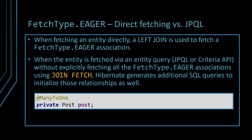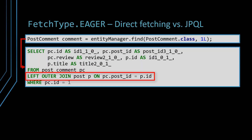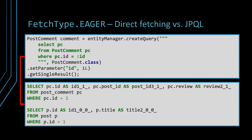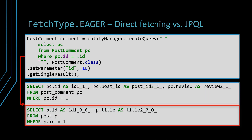When fetching an entity directly, a left join is used to fetch a fetch type eager association. When the entity is fetched via an entity query — JPQL or Criteria API — without explicitly fetching all the fetch type eager associations using join fetch, Hibernate generates additional SQL queries to initialize those relationships as well. Assuming the PostComment entity has a many-to-one Post association that uses the default fetch type eager strategy, when fetching the PostComment entity directly using an EntityManager find() method call, we can see that a left join is generated to fetch the associated Post entity eagerly. On the other hand, if we execute the following JPQL query, two SQL queries are generated: the first one for the PostComment entity, and the second one because the Post association uses the fetch type eager strategy.